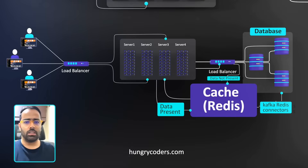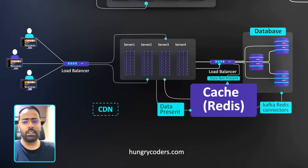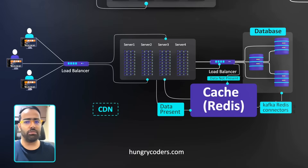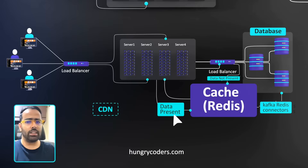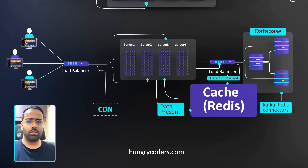The next level improvement is introducing a CDN for static files. When users call the web application, HTML, CSS, and JavaScript files can be fetched from the CDN instead of going directly to the server, reducing load and improving response times. Data is then fetched from cache and returned to the user.